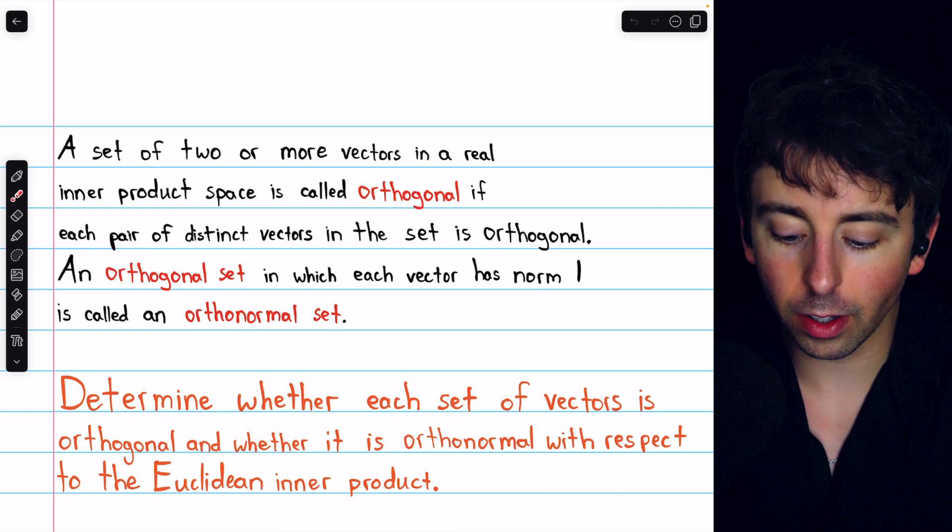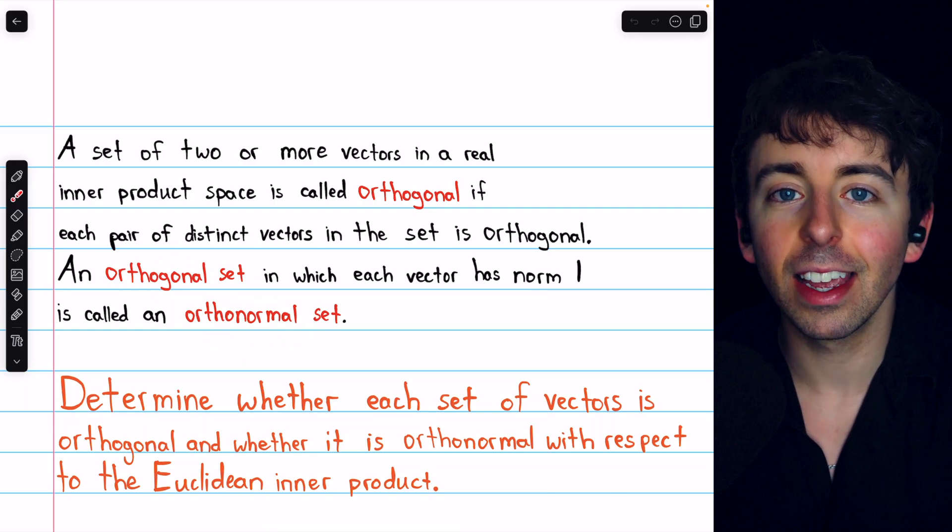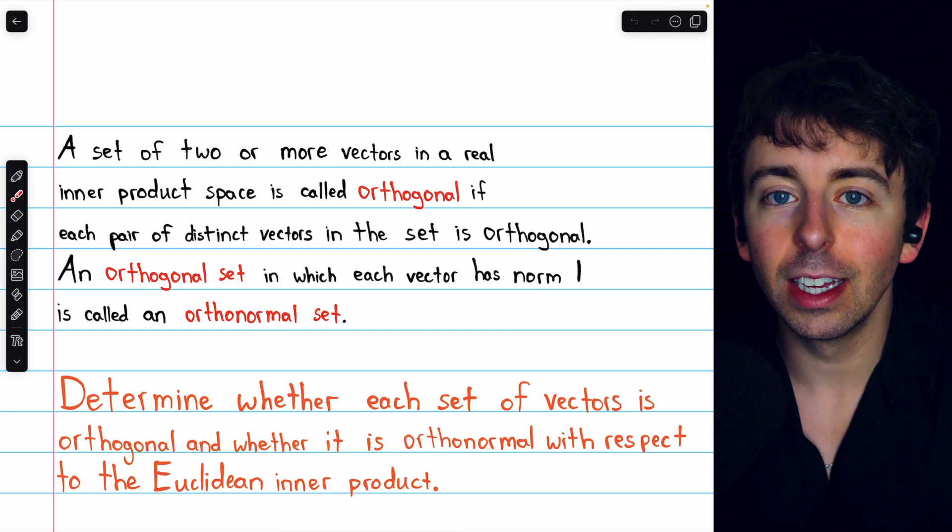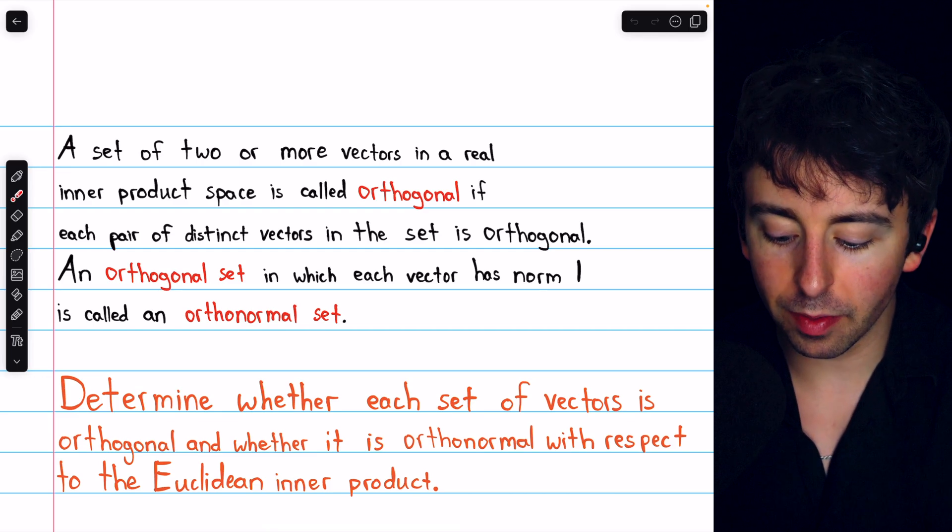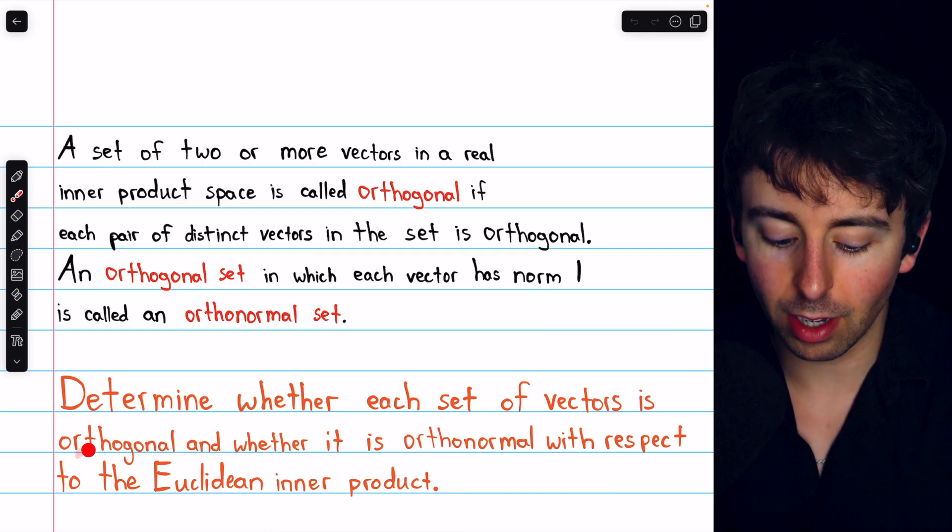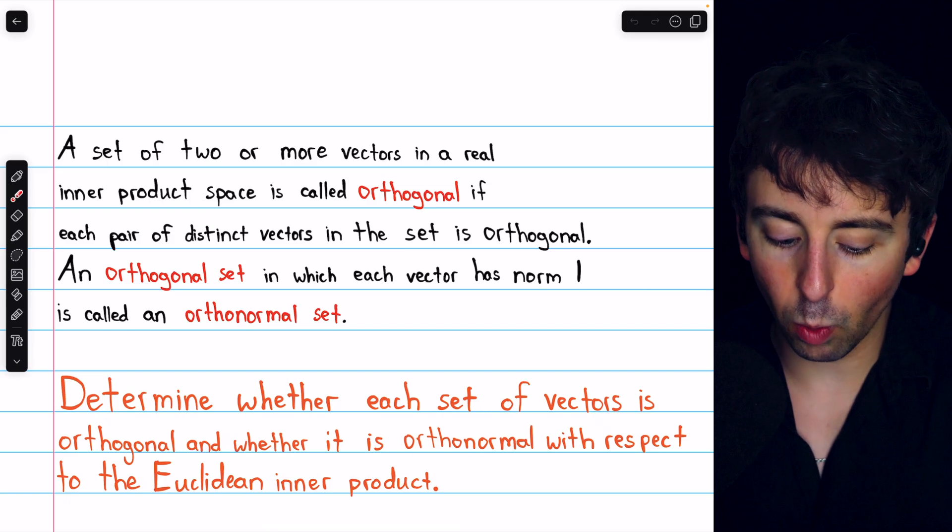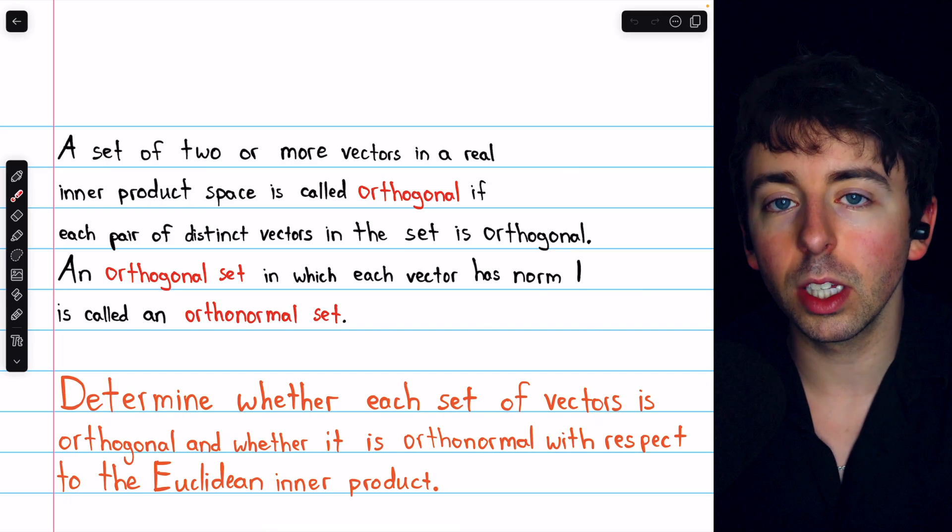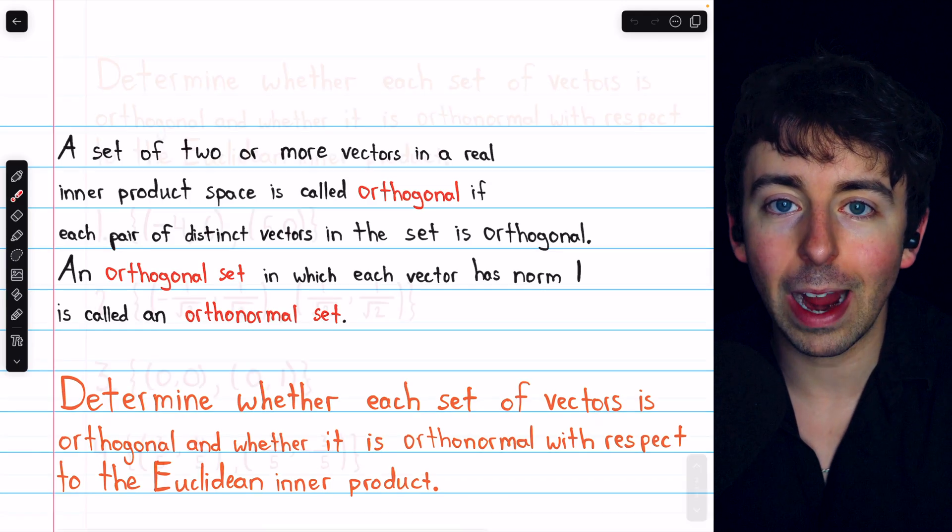We previously defined orthogonal and orthonormal sets in inner product spaces. Today, we'll go through some examples of determining whether a set of vectors is orthogonal and whether it's orthonormal with respect to the Euclidean inner product on R squared.